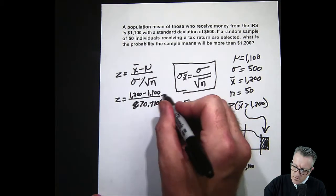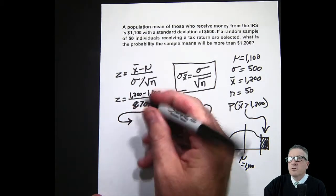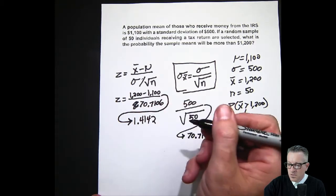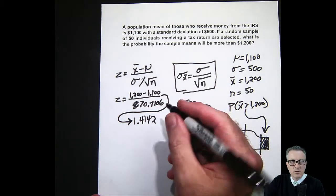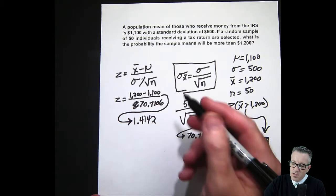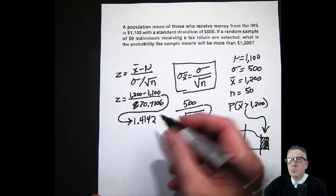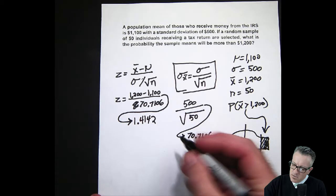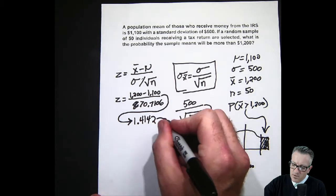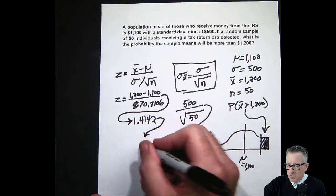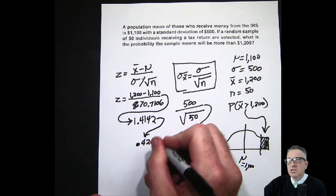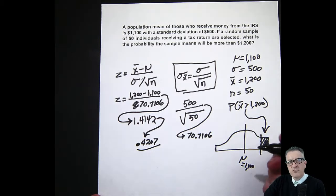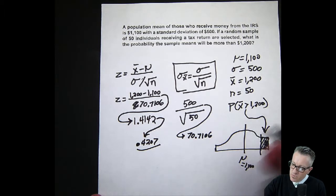What we want to do with that is go and look this up on the z-distribution table. If we look this up on the z-table, we end up coming back with the value under the curve being 0.4207.